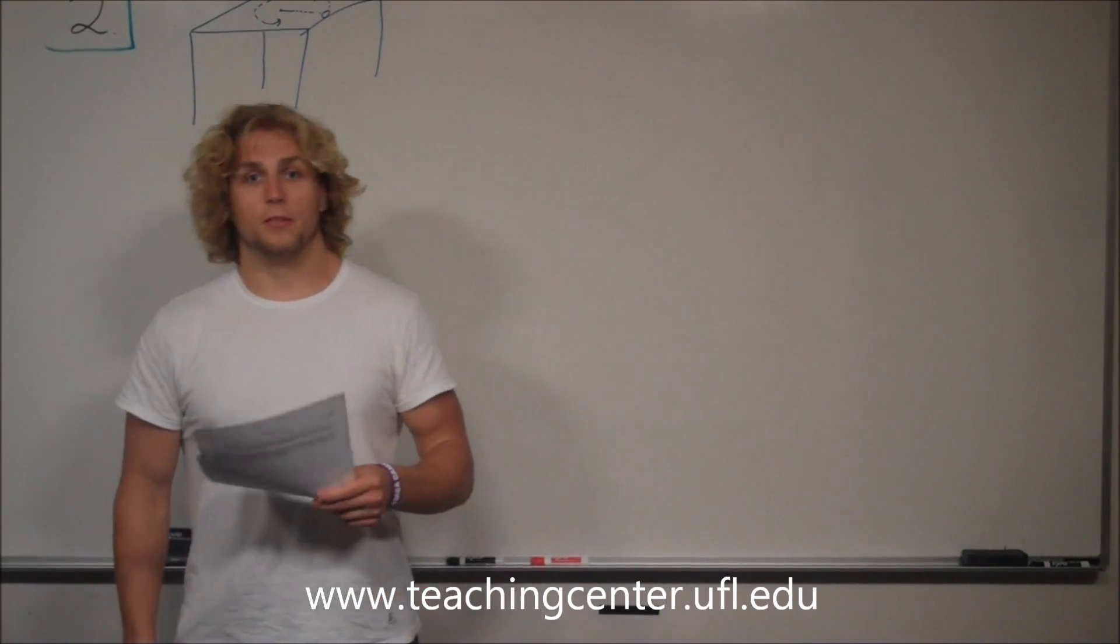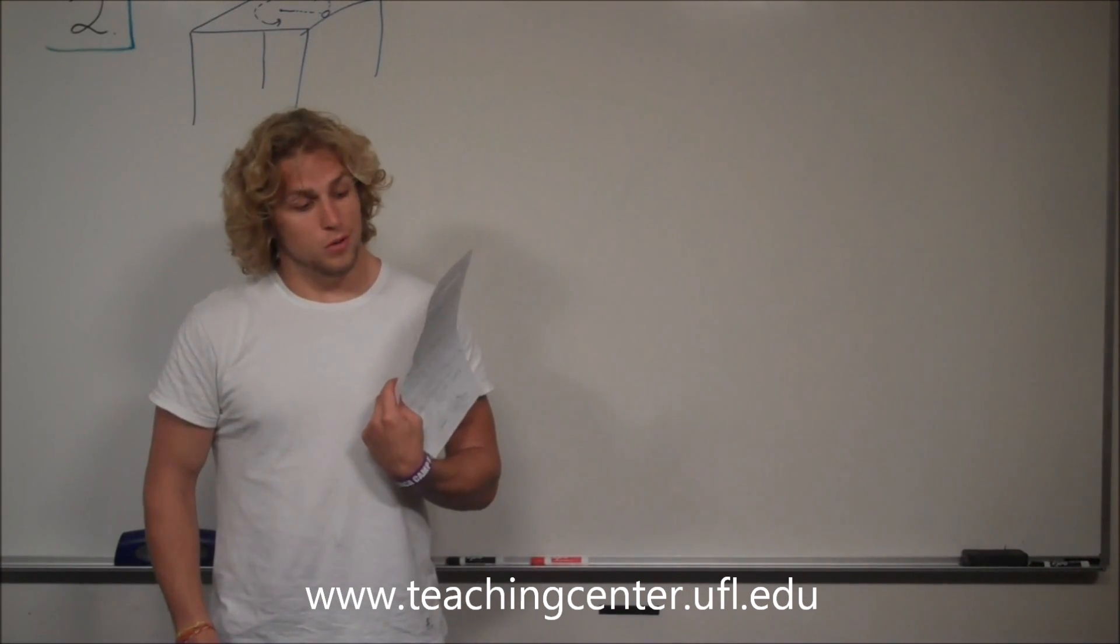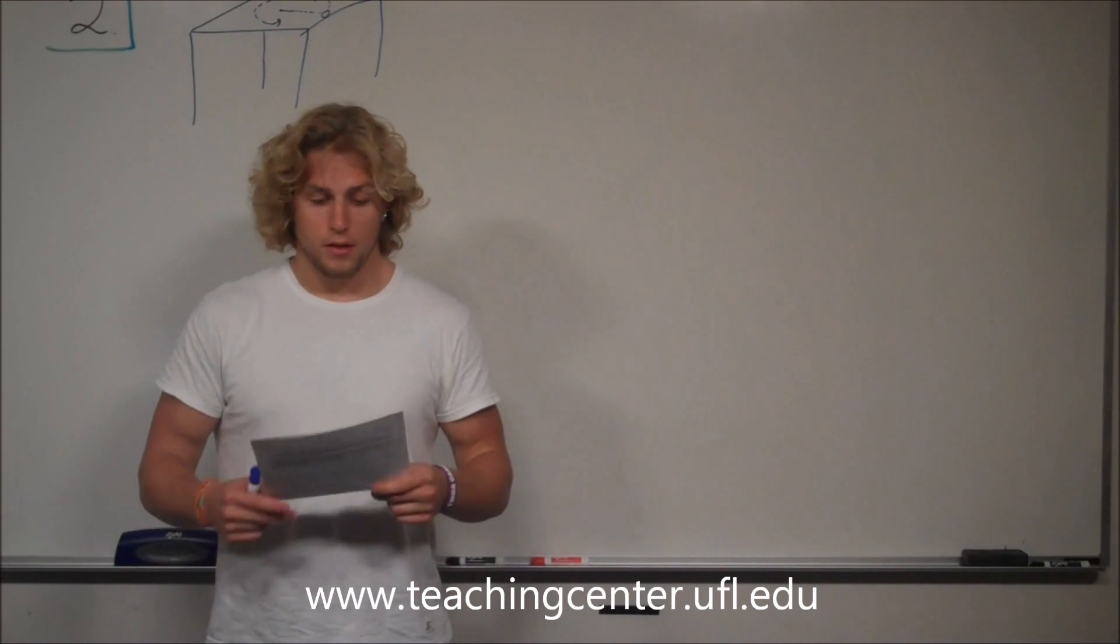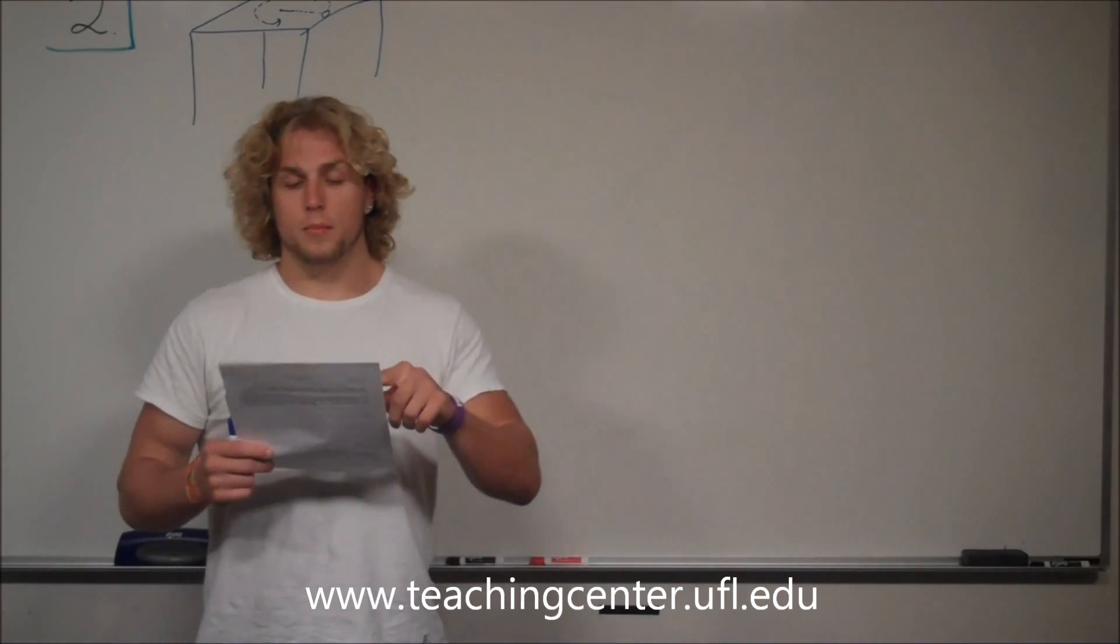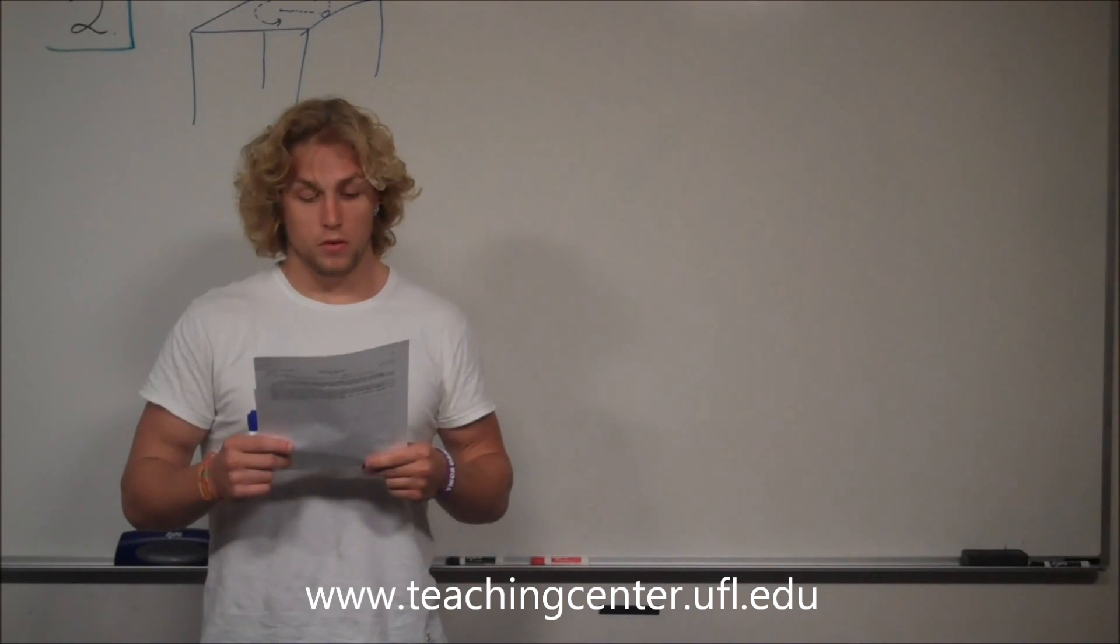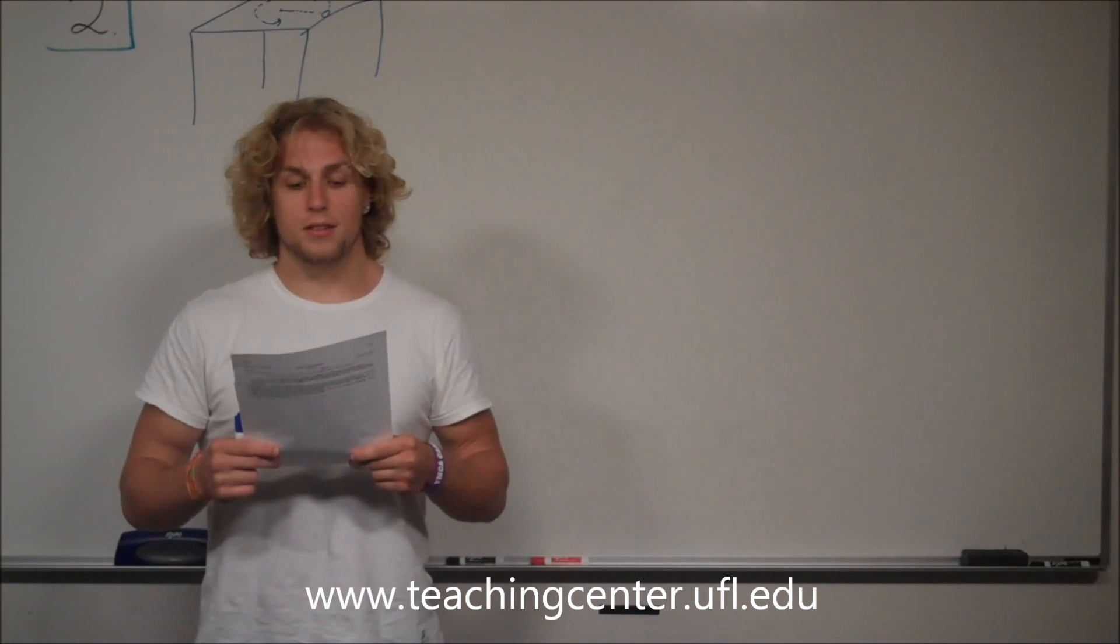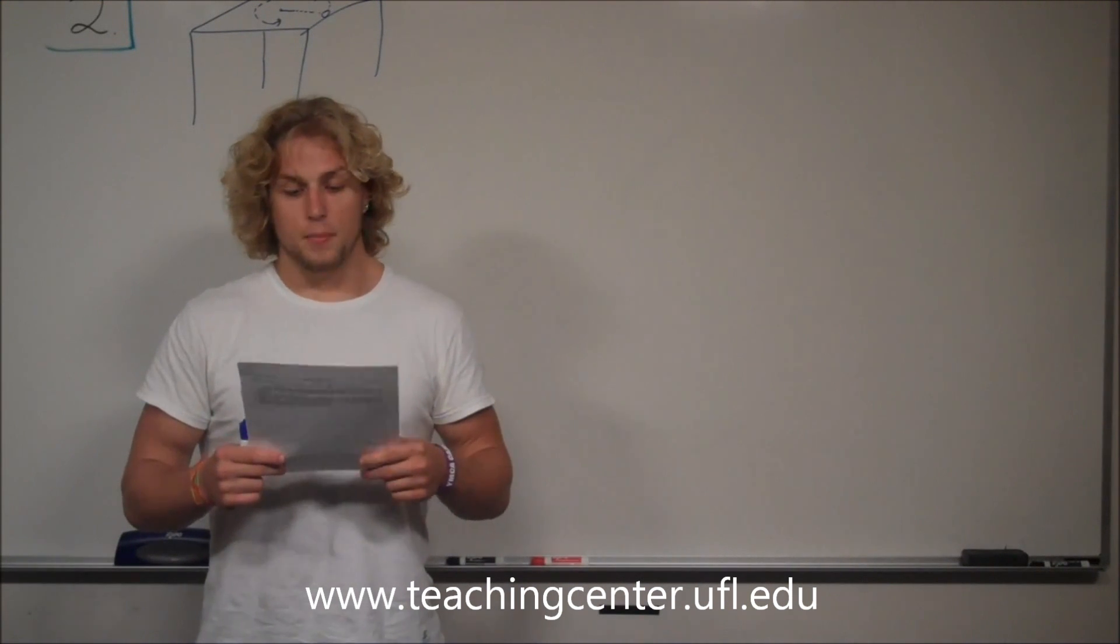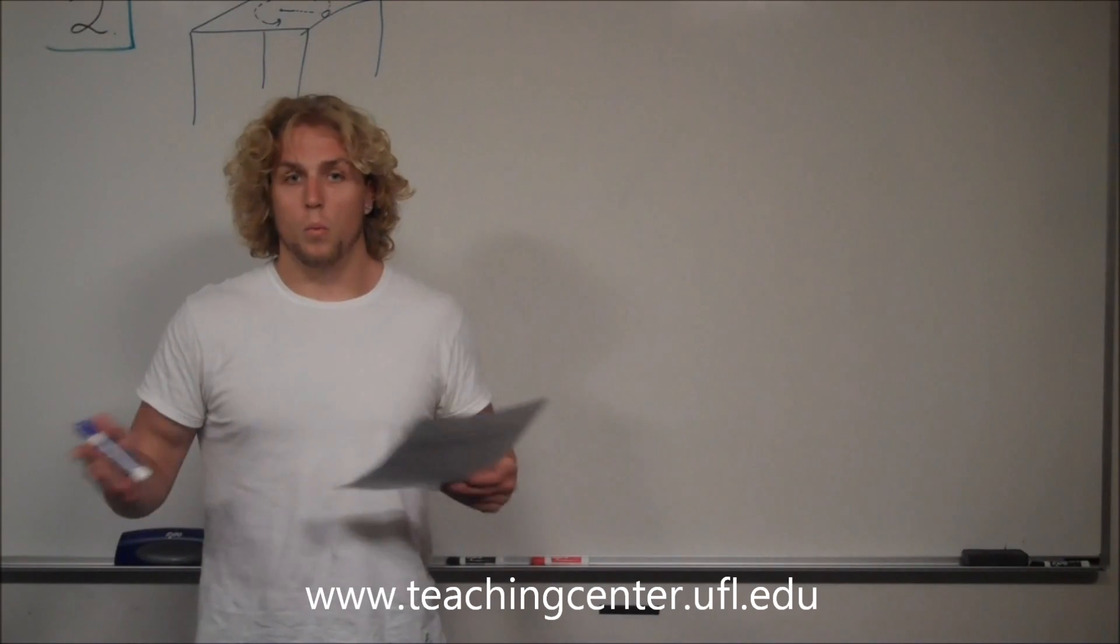This is Physics 2048, Exam 2 from Fall of 2010. I will be doing question number 2 to start with. Question number 2 states: an object is constrained by a cord to move in a circular path of radius 0.5 meters on a horizontal frictionless surface. The cord will break if its tension exceeds 16 newtons. The maximum kinetic energy the object can have is what?